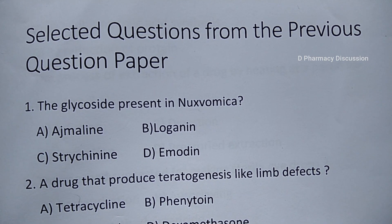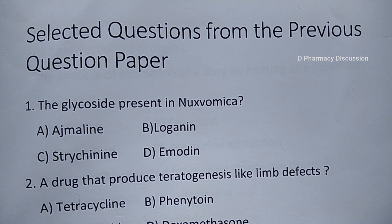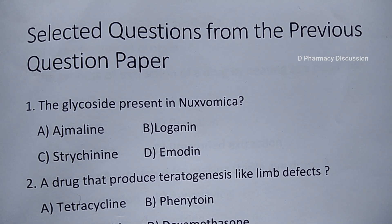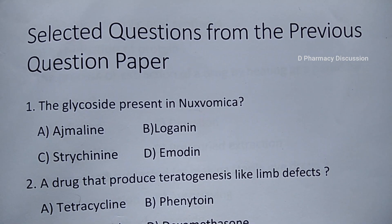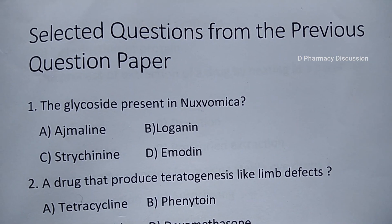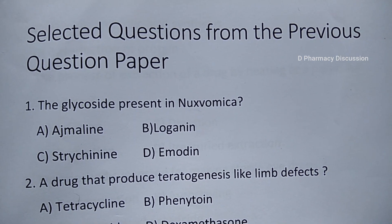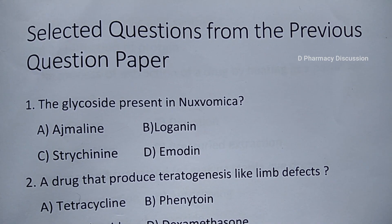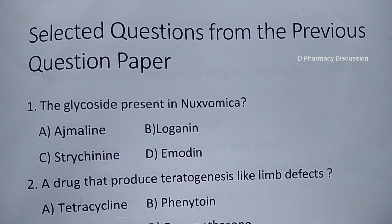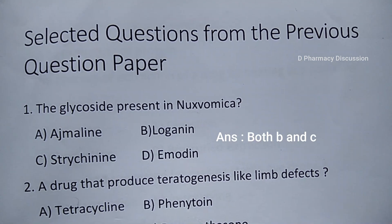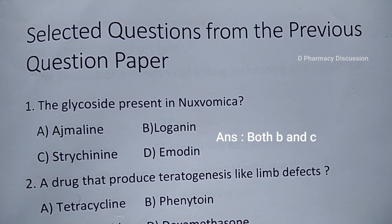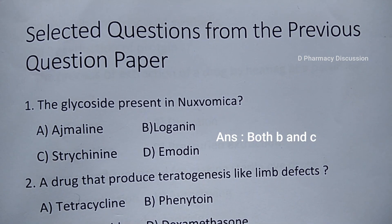First question: the glycoside present in Nux vomica. Options are A. Ajmalin, B. Loganin, C. Strychnin, and option D. Emodin. Correct answer is option B and C, that is Loganin and Strychnin.